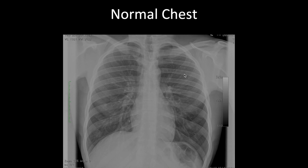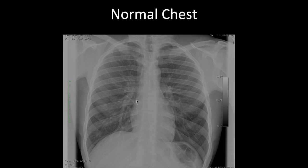Once you've assessed image quality — demographics, projection, position, centering, inspiratory effort, and exposure — you move on to anatomy. You can go centrally outward or outside in; what matters is maintaining the same pattern so you don't miss anything. Starting centrally, the mediastinum should be dead center. Rotation can give a false impression of mediastinal shift, which is why you check for rotation first. Then measure your cardiothoracic ratio — it should not exceed 50%.